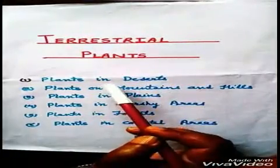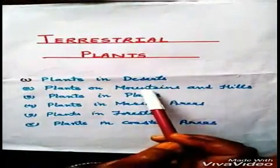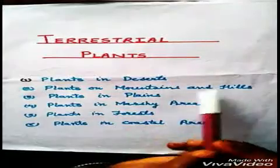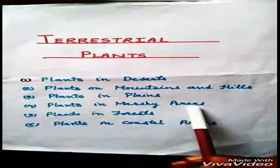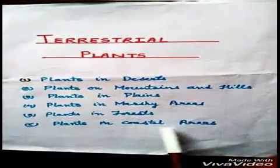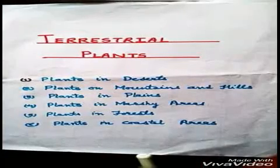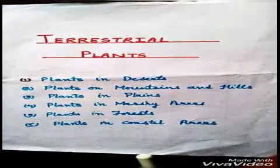Terrestrial plants grow in desert, mountains, hills, plains, marshy area, forest, and coastal area. Let us learn about the different types of terrestrial plants and their adaptation.